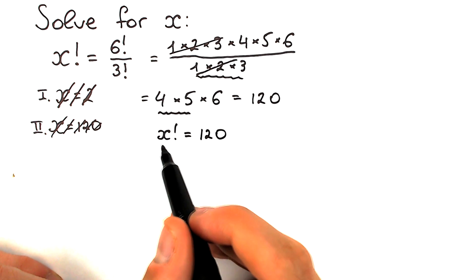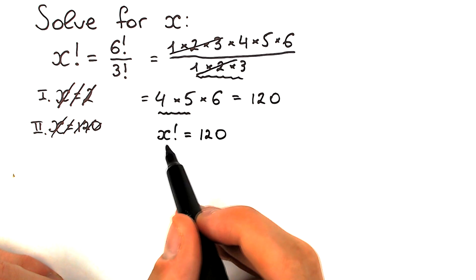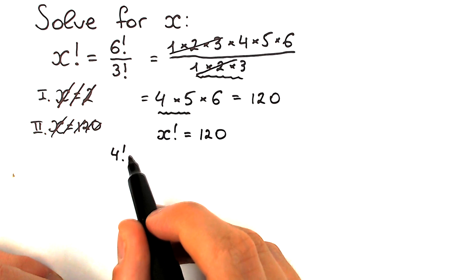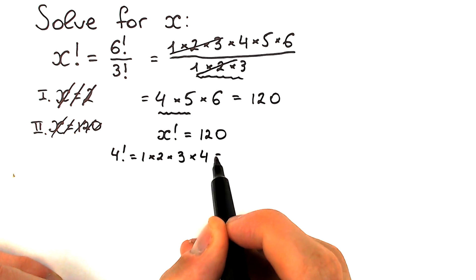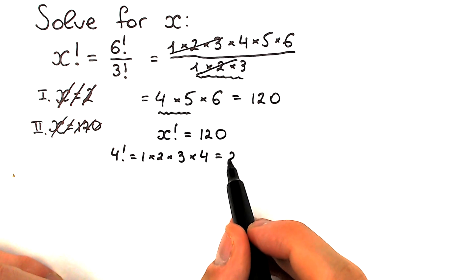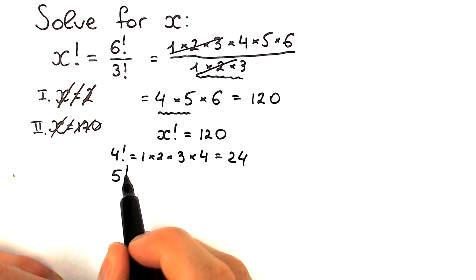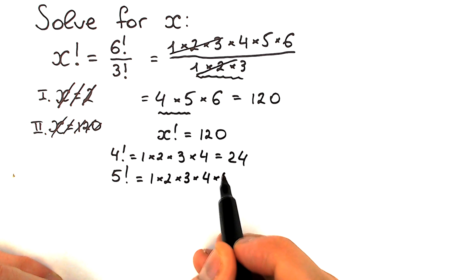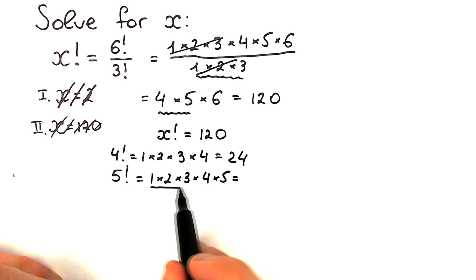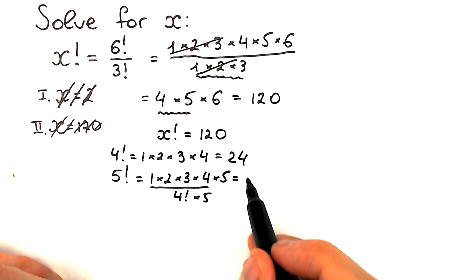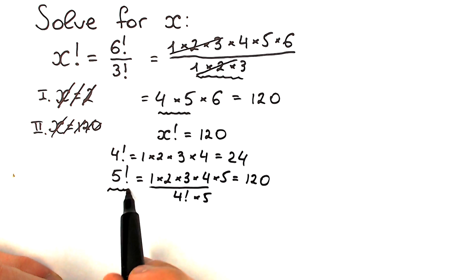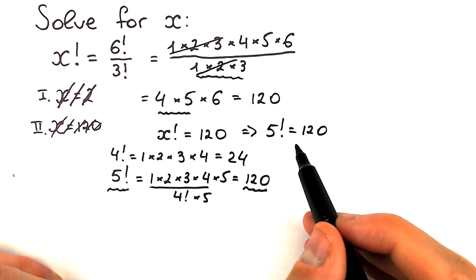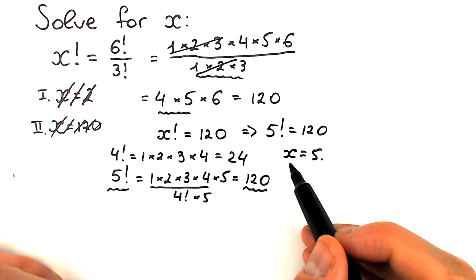Of course, that second solution is absolutely wrong, because we need to find what number x has a factorial equal to 120. Let's start by checking 4 factorial: 1 times 2 times 3 times 4 equals 24 — that's too small, so we need a bigger number. Let's check 5 factorial: 1 times 2 times 3 times 4 times 5 equals 4 factorial times 5, which equals 24 times 5, which equals 120. So 5 factorial equals 120, and therefore x equals 5.